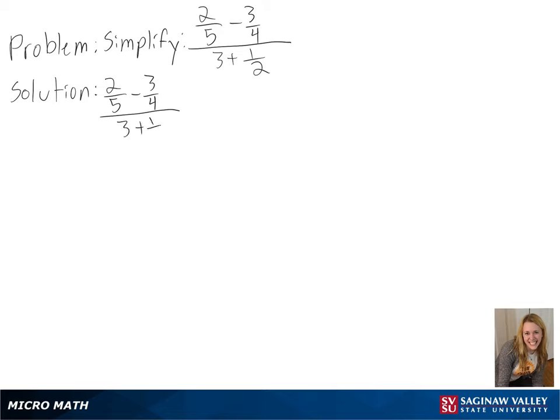The first part of our solution is to change the fractions in the numerator and the denominator so that they have a common denominator. In this case, the common denominator is 20 in the numerator and 2 in the denominator.